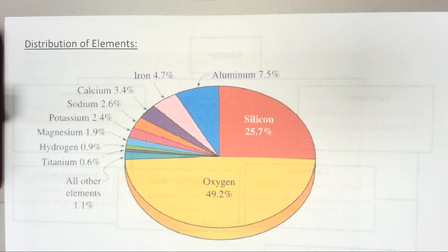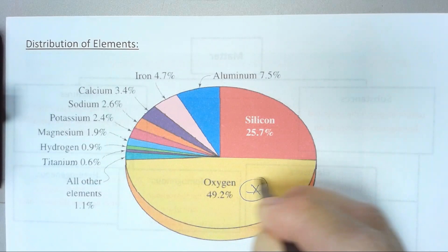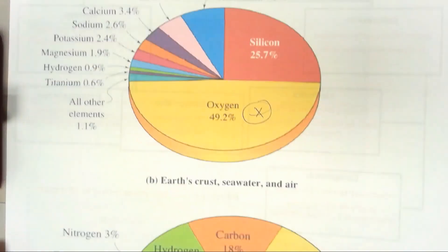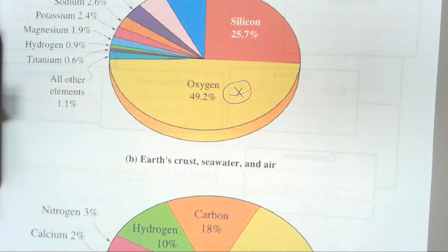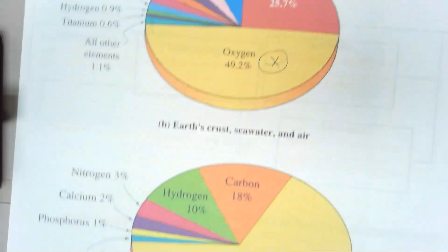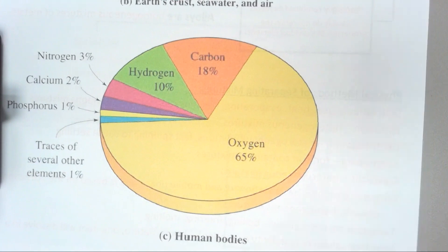What I want you to gather out of these two charts is that oxygen is the number one element in both the Earth's crust, seawater, and air, and in human bodies.